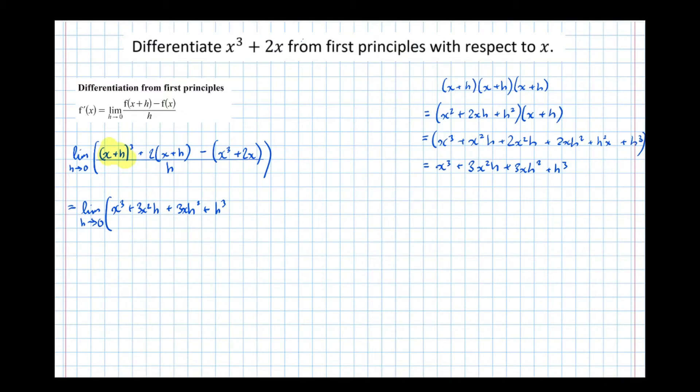So now in the next one, the 2x plus h, multiplying out that bracket we get plus 2x plus 2h, then take x cubed, take 2x, all over h.